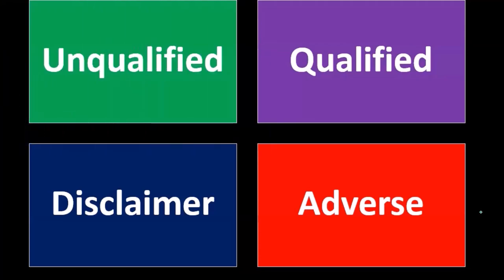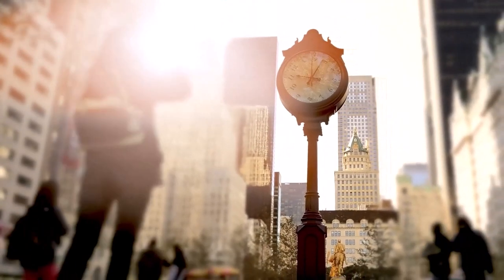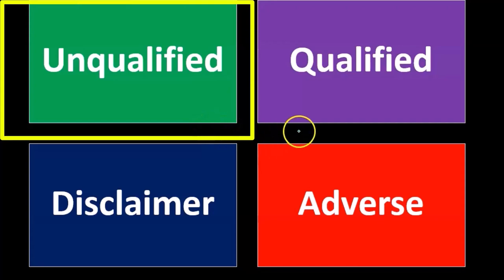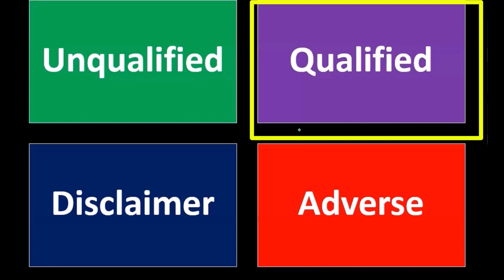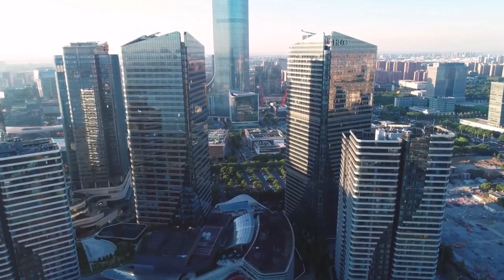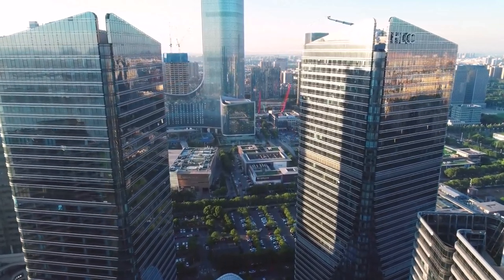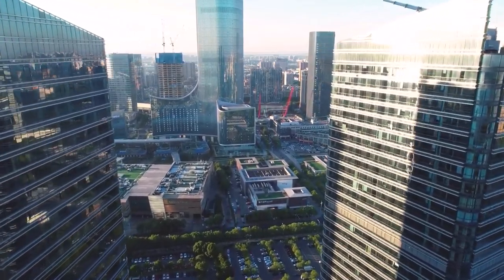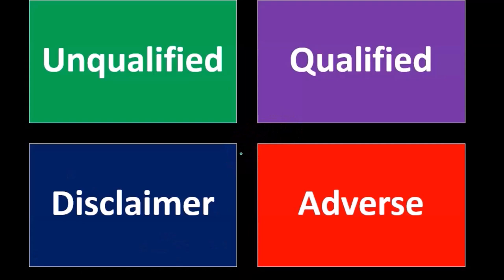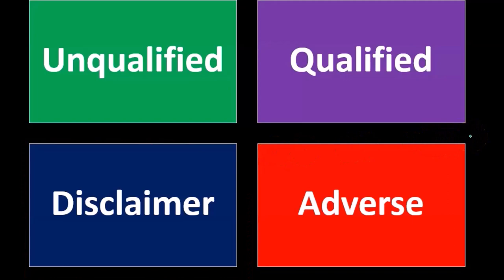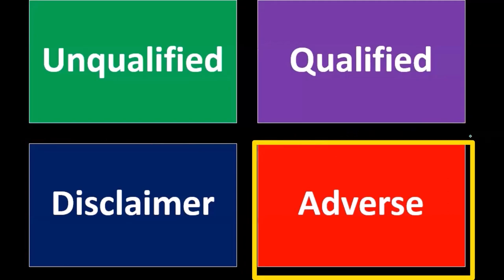If the engagement is terminated, a lot of work on both sides could essentially be wasted. These two types of opinions — disclaimer and adverse — must be issued if conditions arise, but in practice they're not the most common types of opinion. We would expect unqualified to be the most common, followed by some type of qualification where one thing is not in conformity with GAAP. An adverse opinion is probably the most rare type of actual report that would be completed.